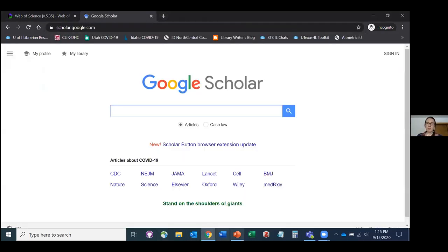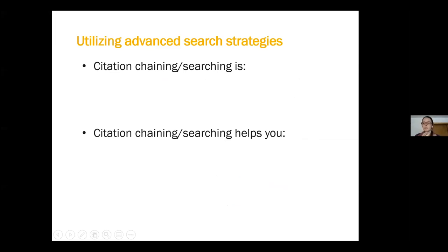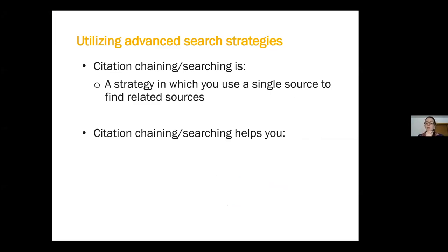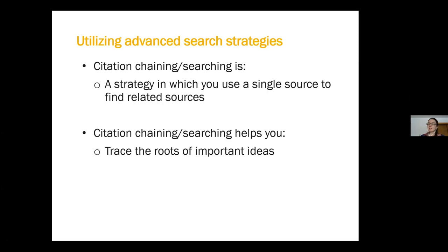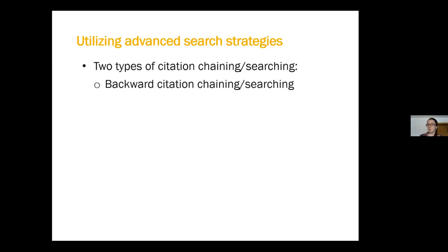The last thing I want to talk about is citation chaining, one of my favorite things to teach. Citation chaining is a strategy in which you use a single source to find related sources, building off of that one article. It helps you trace the roots of important ideas and discover how a topic has changed over time without having to continue changing your search. There are two types: backward citation chaining, which goes back in the past from a source, and forward, which looks ahead from that first source.